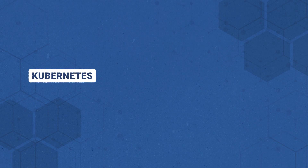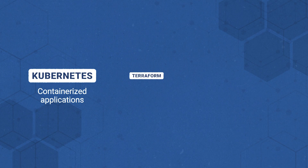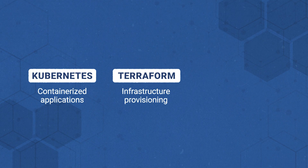For instance, Kubernetes orchestrates containerized applications, automatically managing thousands of containers across clusters. Similarly, Terraform coordinates infrastructure provisioning across multiple cloud providers.